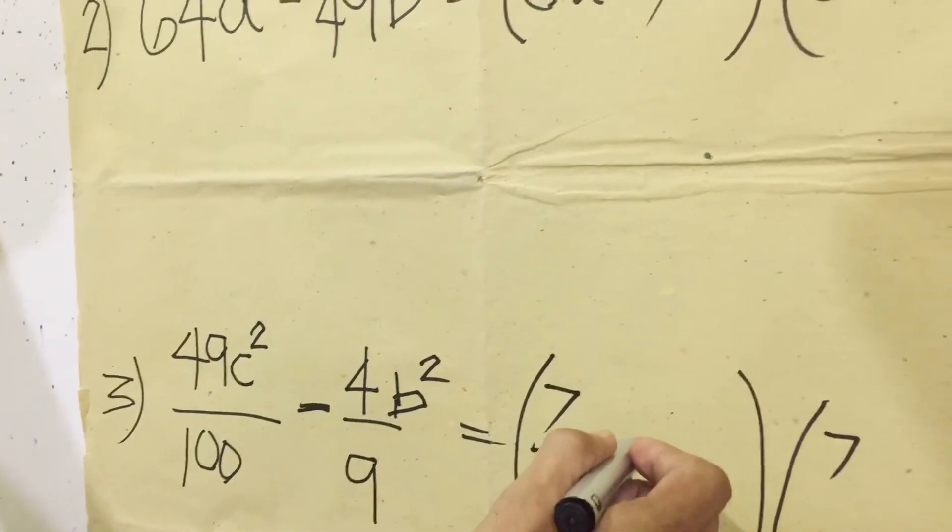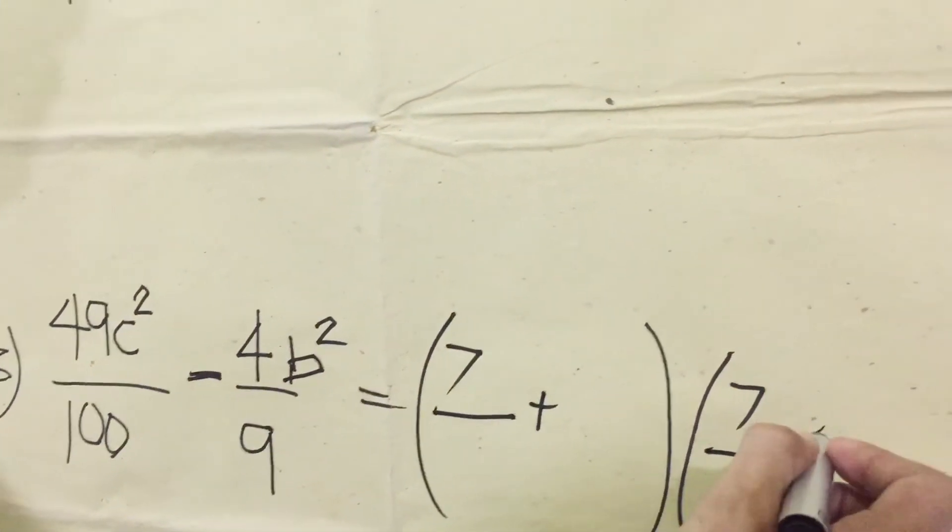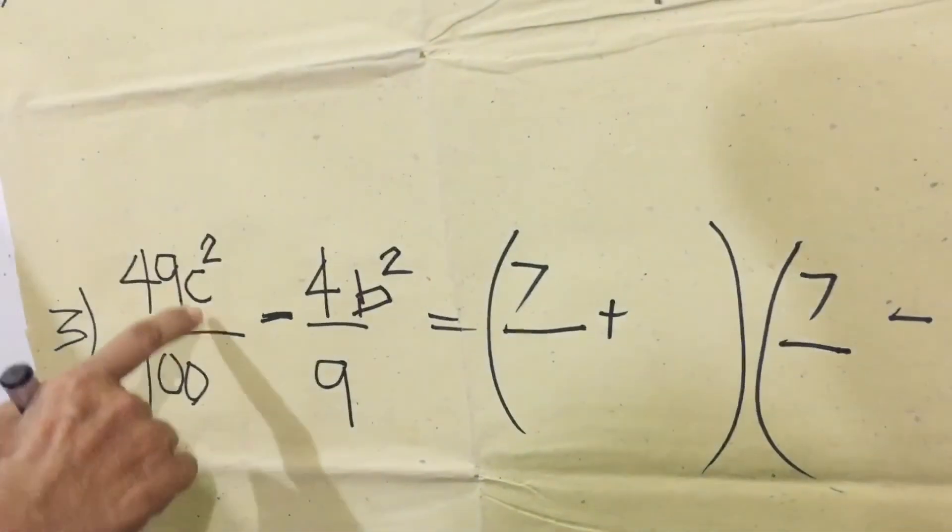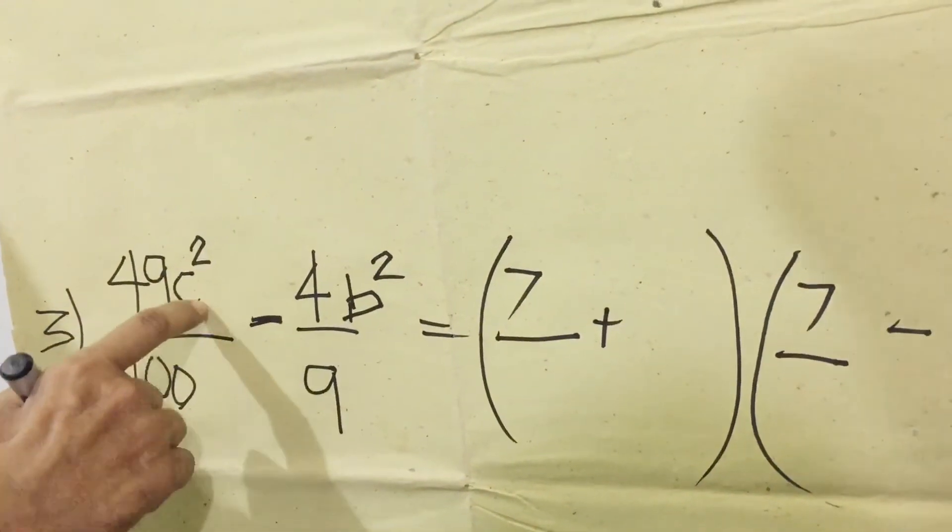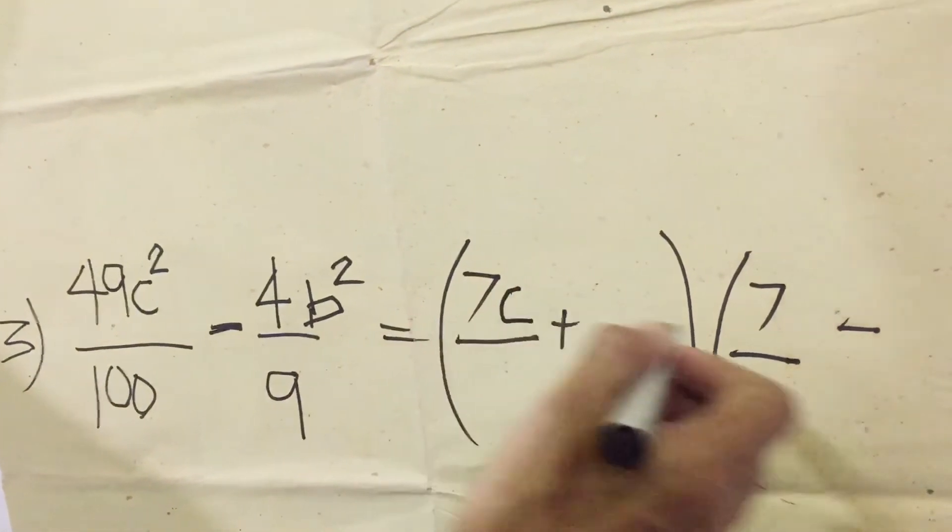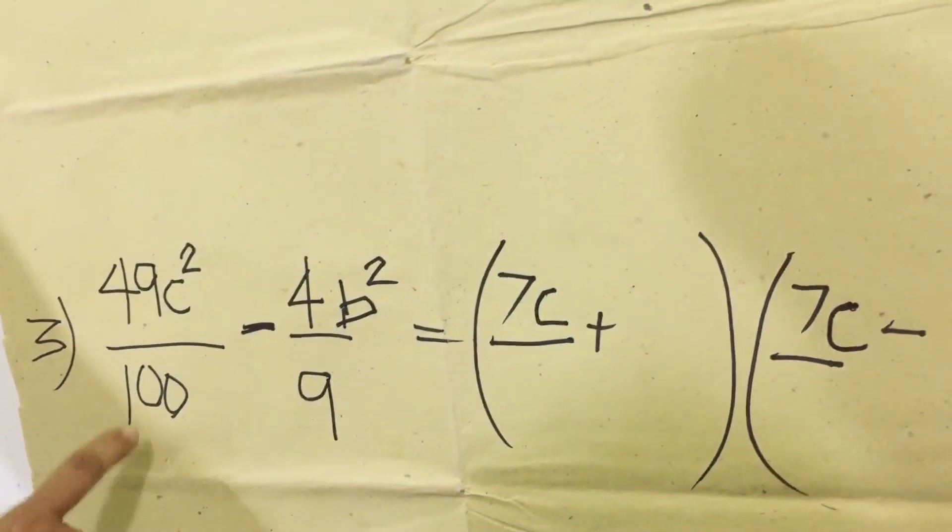Then division line, we have your positive. Division line, we have your negative. For C-squared, the square root of that is C. C times C equals C-squared. Let's see here, write C.